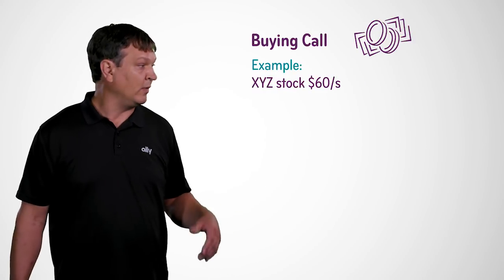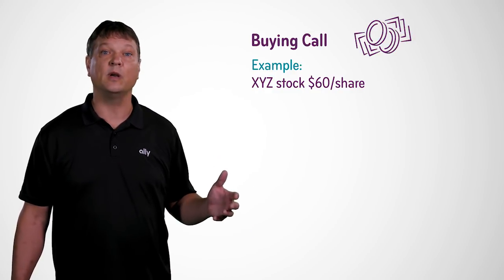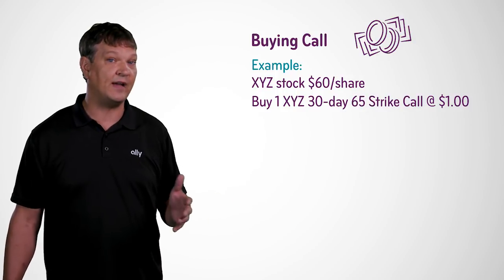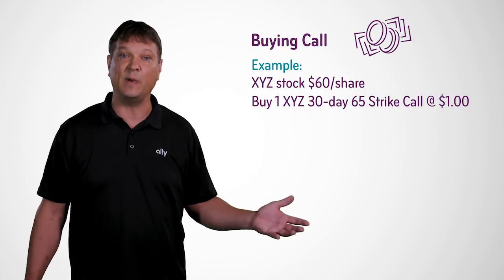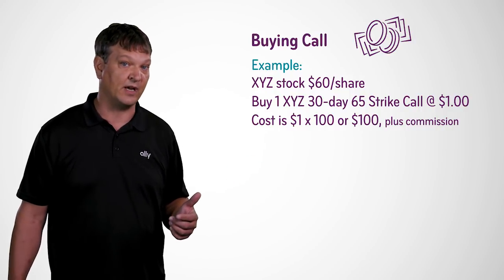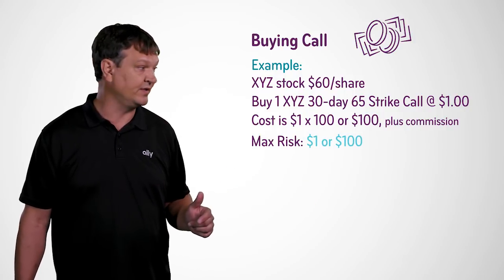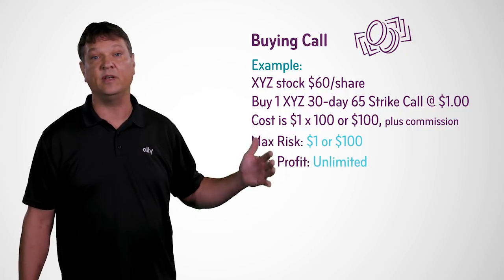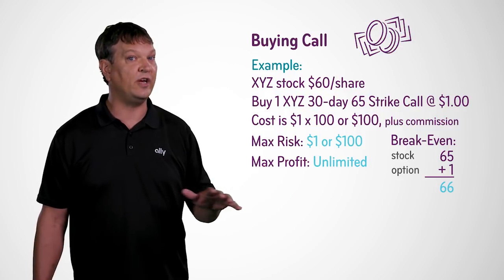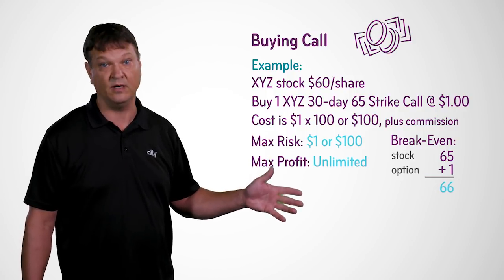Now let's look at an actual example. We have XYZ, a fake stock, trading at $60 a share. Our forecast is that we are bullish, so we're going to buy an option contract. We see the XYZ 30-day 65 strike call option is trading for a dollar. That means our total cost is $100 plus commission to buy this option contract. Our max risk will be that $1, or $100. Our max profit is unlimited on the upside. Our break even is our strike price plus the premium paid, or $66 in our example.